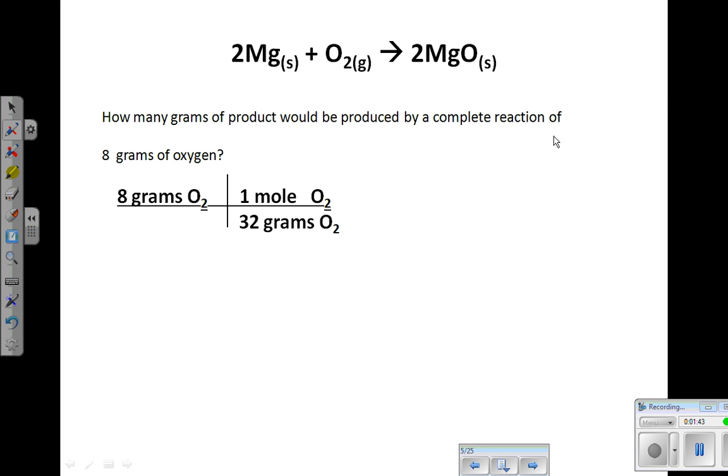We're going to go ahead and plug that in as our next section of the dimensional analysis, or our next conversion factor. 32 grams is equal to one mole, and that will cancel out grams of oxygen for us. So now we're in moles, and we can use that for our next step.